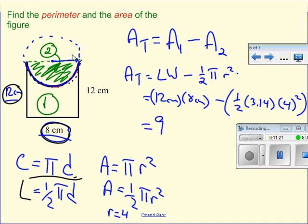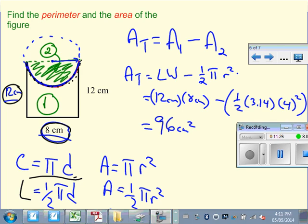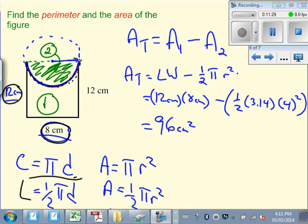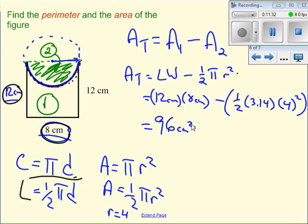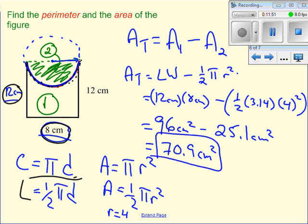So I have 96 centimeters squared, subtract one-half 3.14 times 4 squared, which is going to be equal to 25.1 centimeters squared. Same units, subtract them. And I get 70.9 centimeters squared as the area of this composite figure.